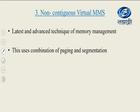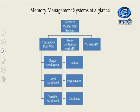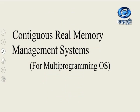The third type is non-contiguous virtual memory management system — this is the latest and advanced technique of memory management and uses a combination of paging and segmentation. In a glance, there are three types at the top: contiguous real memory management, non-contiguous real memory management and virtual memory management. Under contiguous there are three types: single contiguous, fixed partition and variable partition. Under non-contiguous real memory management there are paging, segmentation and combined. Let us see all of them one by one.